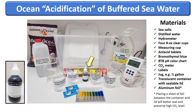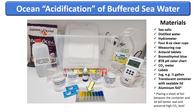Bromothymol blue is a pH-sensitive color indicator. A small eyedropper bottle is ideal for use. If a pH color chart does not come with the bromothymol blue, it can be downloaded from the web. Finally, a CO2 meter will quantify the elevation of carbon dioxide in the closed container.